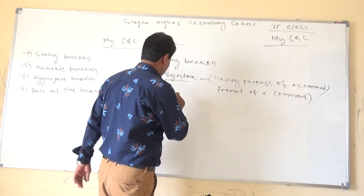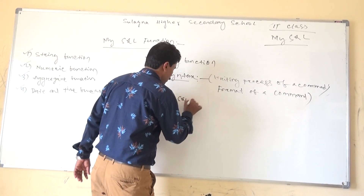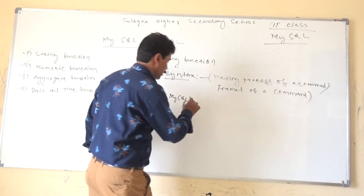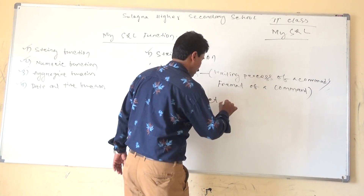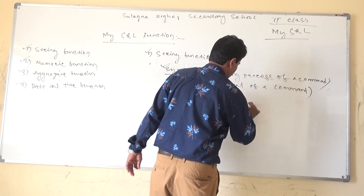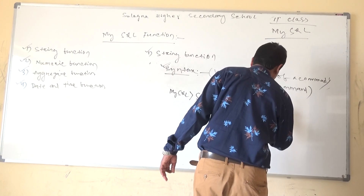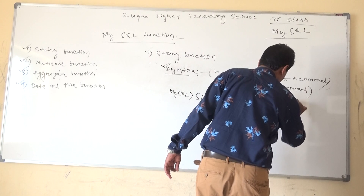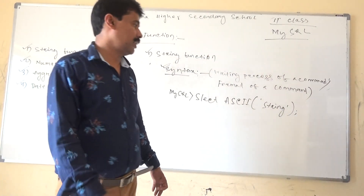So, the ASCII function syntax in MySQL: use the greater-than symbol prompt, then the SELECT command — S-E-L-E-C-T — then ASCII — A-S-C-I-I — then bracket, then the character in single quotes, then the string, then semicolon.